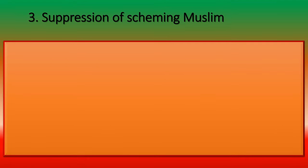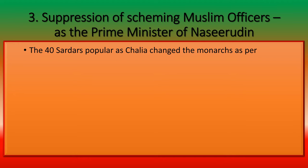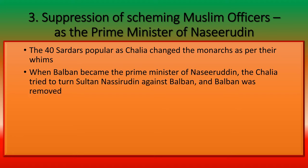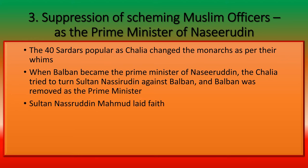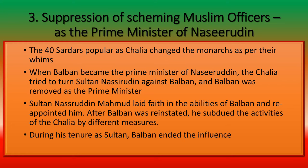The forty sardars, known as the Chalia, changed the monarch as per their whims. When Balban became the Prime Minister of Nasiruddin, the Chalia tried to undermine him, but Sultan Nasiruddin placed his faith in Balban's abilities and reappointed him. After reinstatement, Balban subdued the activities of the Chalia by different measures. During his tenure as Sultan, he ultimately ended the influence of the Chalia in the regime.